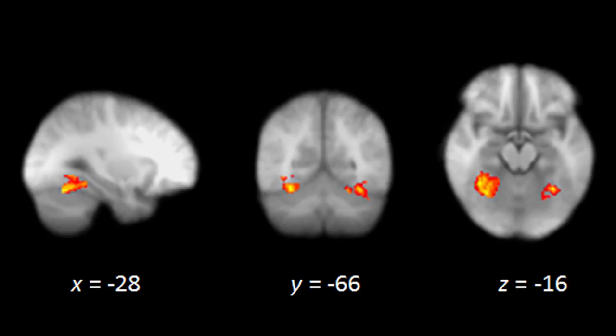What we normally find in our experiments is that participants show differences in fusiform gyrus activation when they view a face of their own race compared to a face of a different race. In another experiment, we gave participants either a placebo or propranolol before they underwent a brain scan viewing black and white faces. And we found that propranolol reduced activation differences towards black and white faces in the fusiform gyrus.